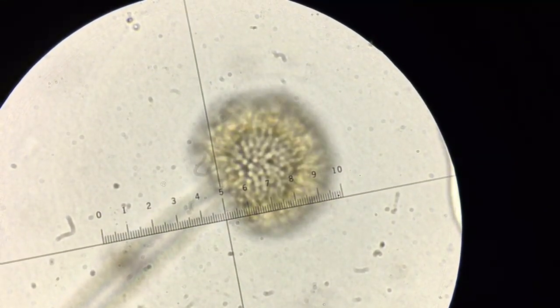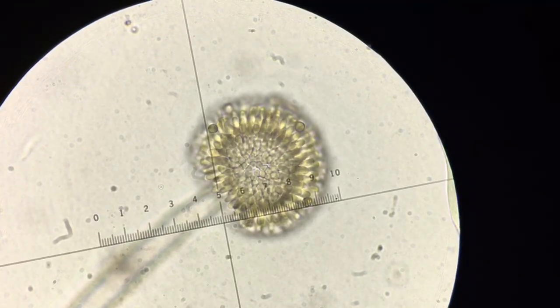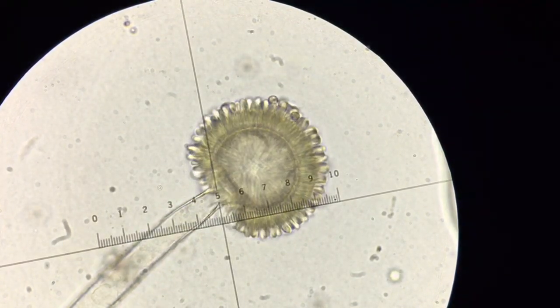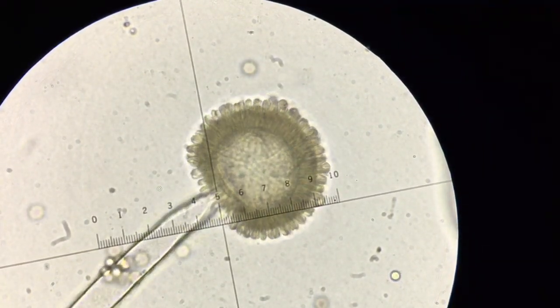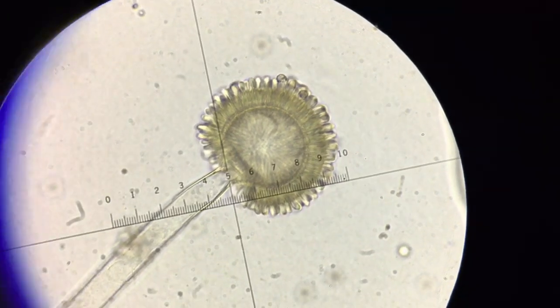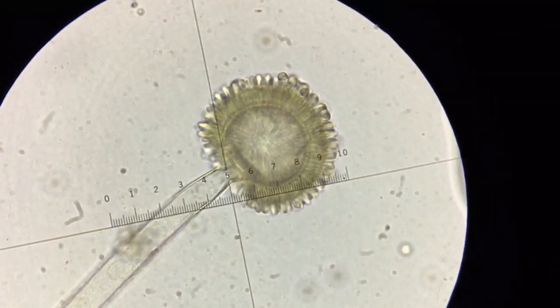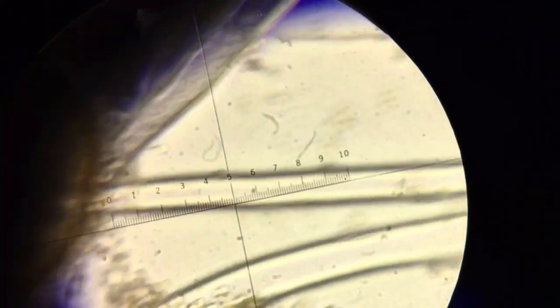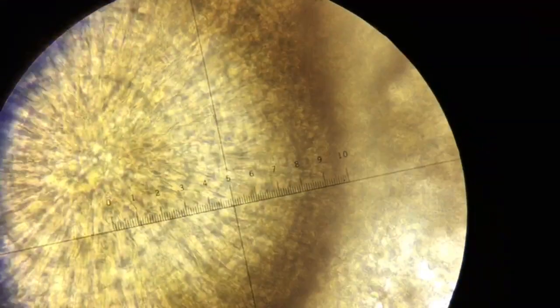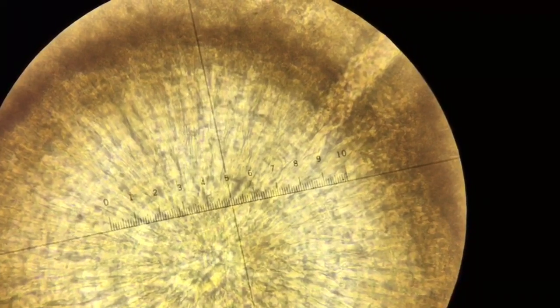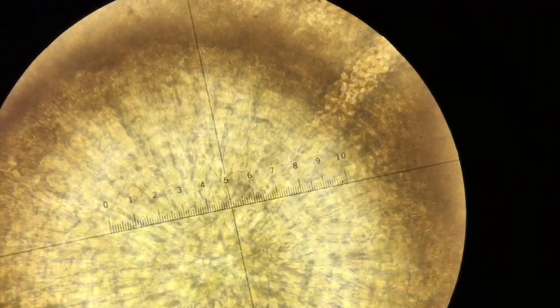It has to do with how many stages there are in these phialides. In this case, because it's an immature conidiophore, we see only one stage directly off the vesicle, but in the mature conidiophore we're going to see two, and I don't know if the quality of the video can show it or not.